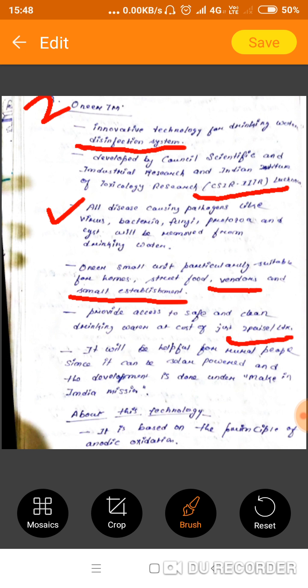Next, provide access to safe and clean drinking water at a cost of just two paise per liter. It will help rural people since it can be solar-powered, and the development is done under Make in India mission. Now let's see about its technology. This is based on the principle of anodic oxidation.